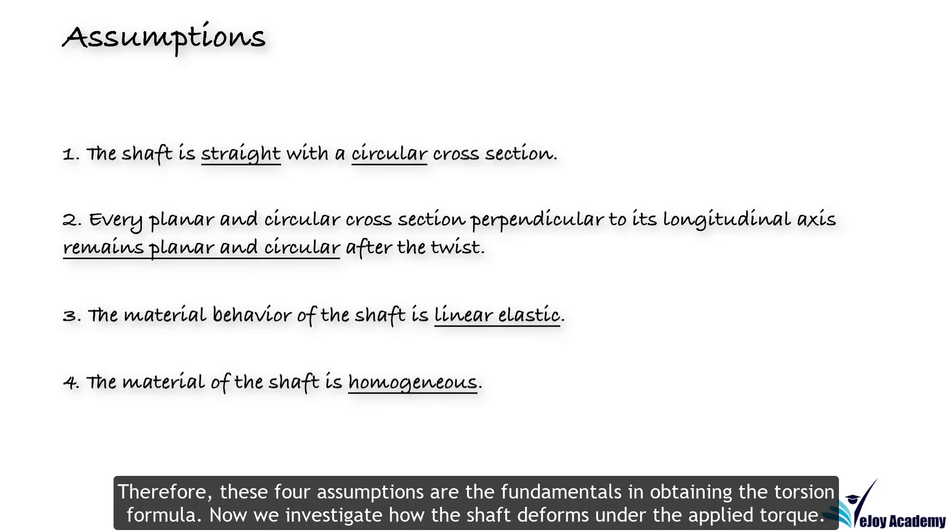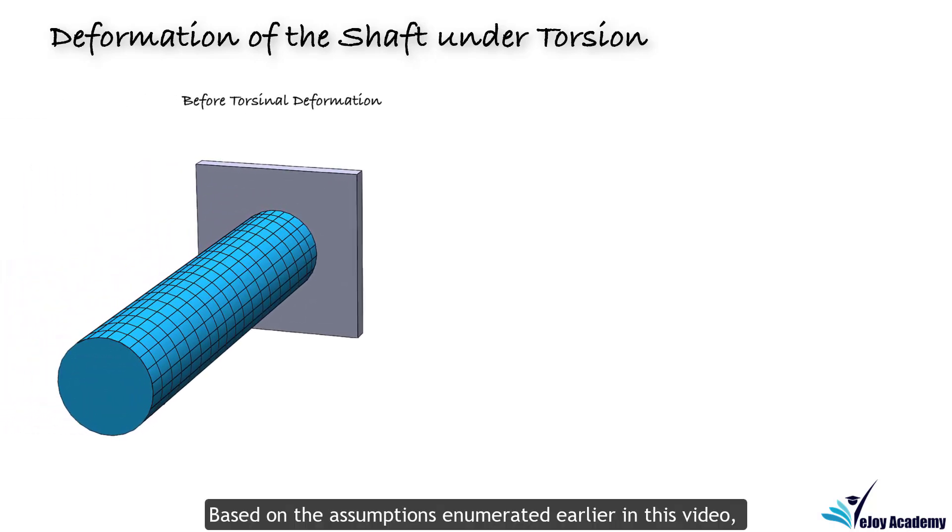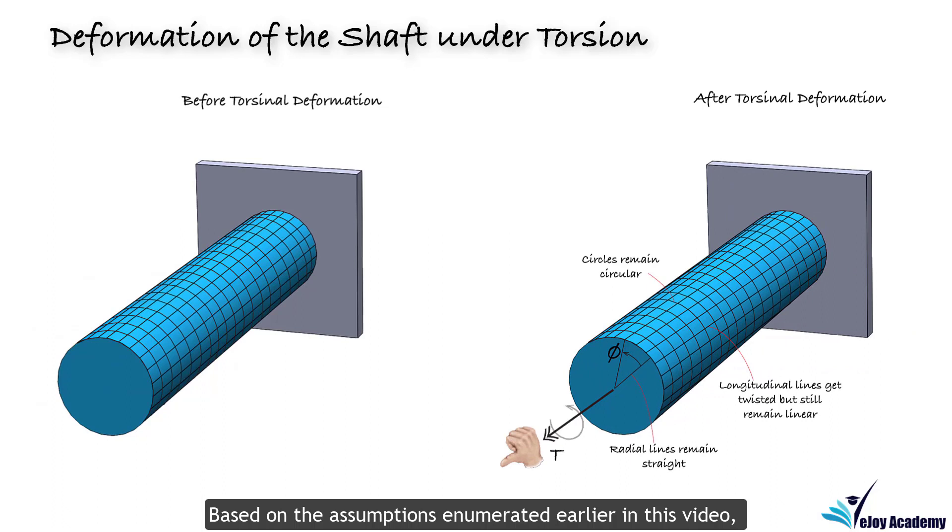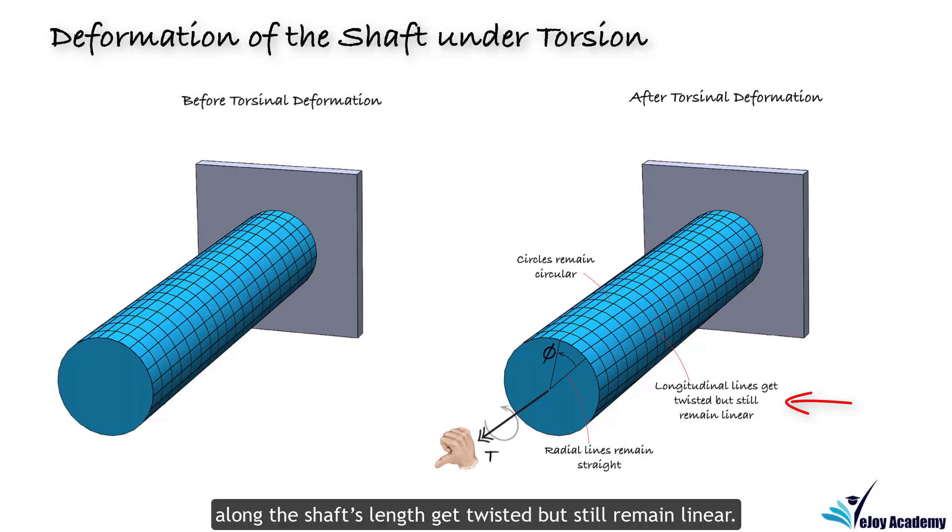All right, let's see how the shaft deforms under the applied torque. Based on the assumptions enumerated earlier in this video, all circular cross sections of the shaft remain circular and also longitudinal lines along the shaft's length get twisted but still remain linear. Moreover, each radial line on cross sections remains linear. It means that the twist on each cross section linearly varies from its longitudinal axis to the outer surface of the shaft.